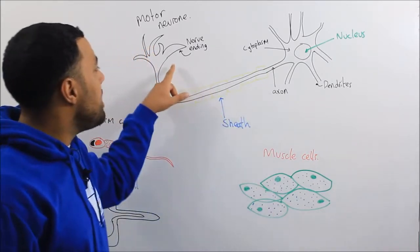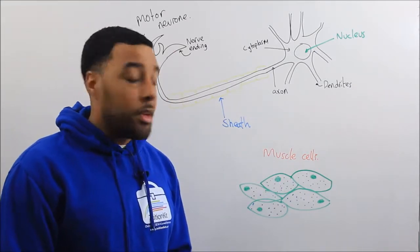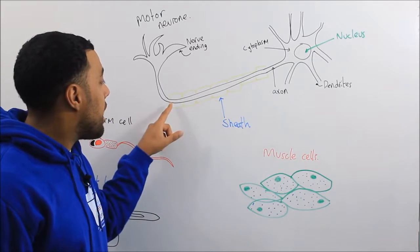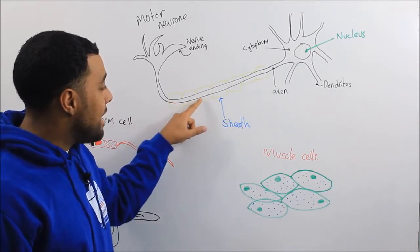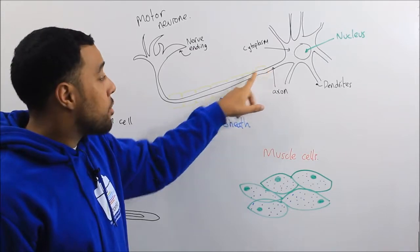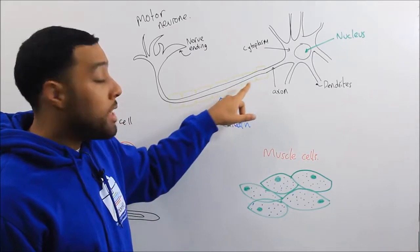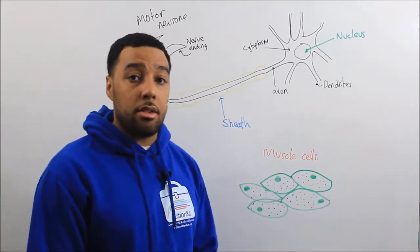You can see that the motor neuron is adapted for that function. First adaptation is that it has this insulating layer around the axon. The axon is where the electrical impulse travels and this sheath around the axon acts as an insulator.